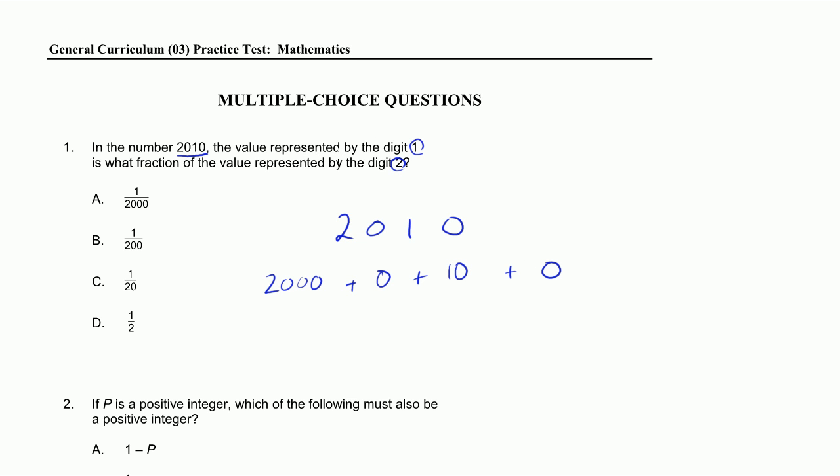The value represented by the digit 1 is 10, and it's what fraction of the value represented by the digit 2? Well, the digit 2 represents 2,000. So the fraction is going to be 10 divided by what the 2 represents, 2,000. The 1 represents 10, the 2 represents 2,000. We can cancel out a 0. We get 1 over 200, which is choice B.